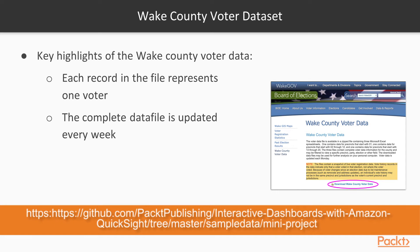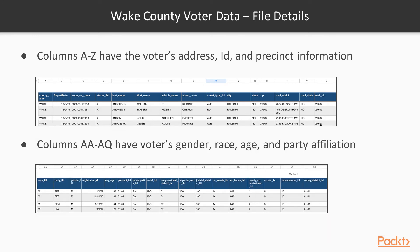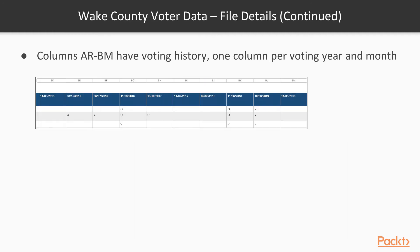Now let's look at the file layout in detail. The file can be grouped into three sections. Section 1, which includes columns A to Z, has voter basic information: ID, address, precinct, etc. Section 2, which includes columns AA to AQ, has voter gender, race, age, and party affiliation. Section 3, columns AR to BM, has the voting history for each election by month and year.